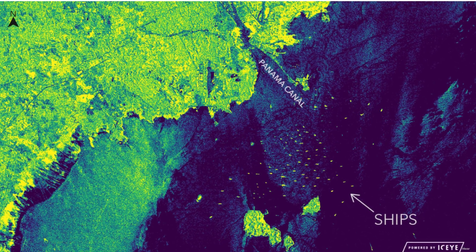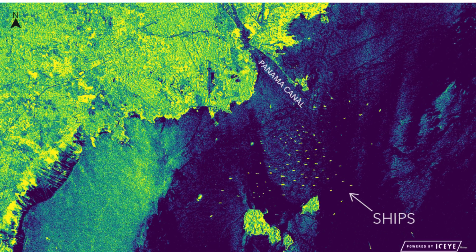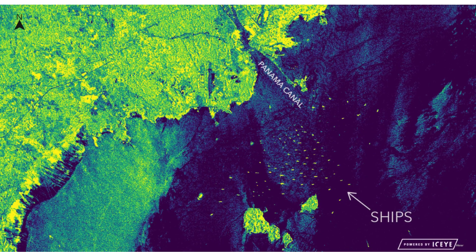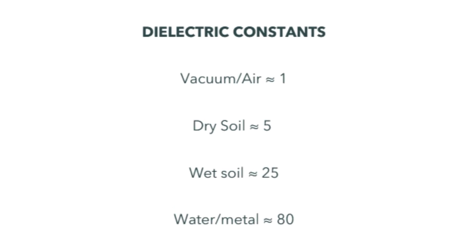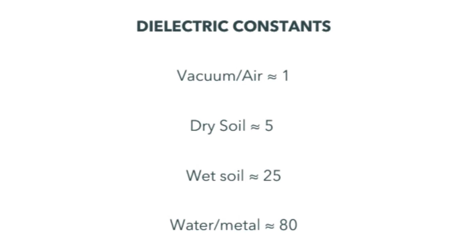Dielectric constants: Vacuum/air is almost equal to 1, dry soil is almost equal to 5, wet soil is almost equal to 25, water/metal is almost equal to 80.